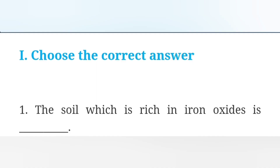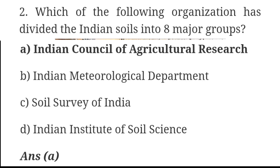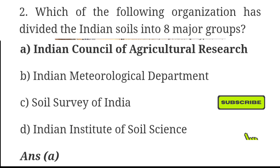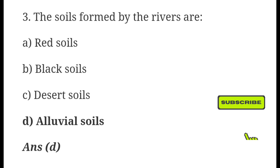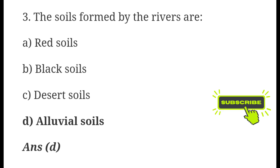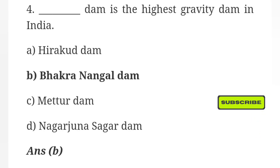Choose the correct answer. Question 1: The soil which is rich in iron oxide is — Answer: Option C, Red soil. Question 2: Which organization has divided the Indian soil into 8 major groups? — Answer: Indian Council of Agricultural Research. Question 3: The soils formed by the rivers are — Answer: Option D, Alluvial soils.